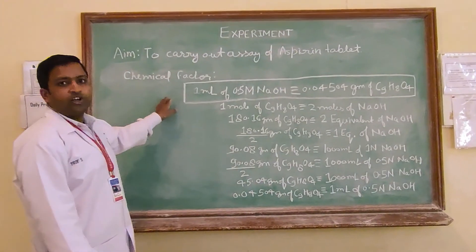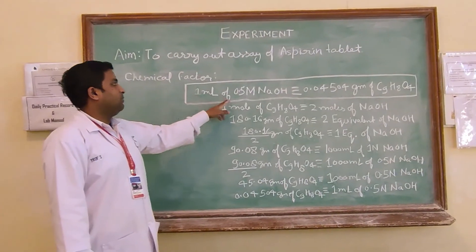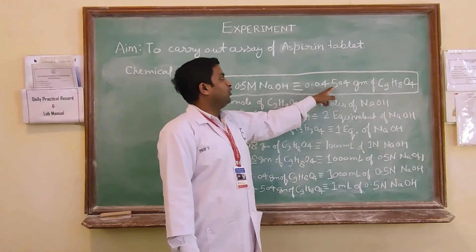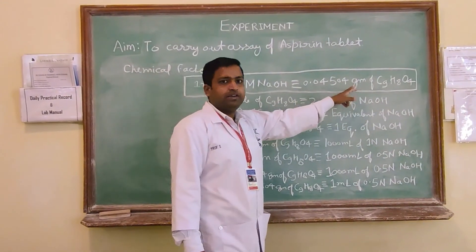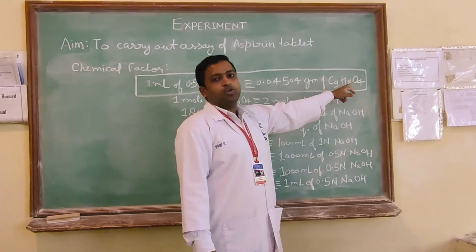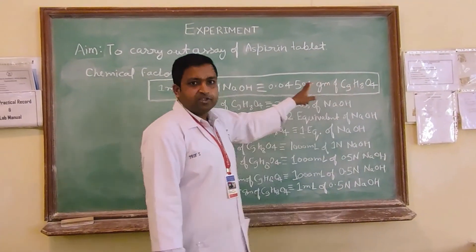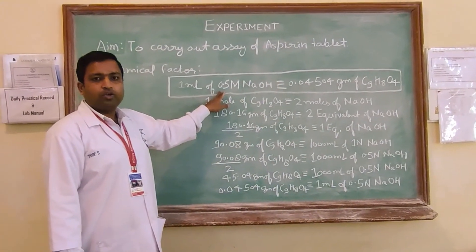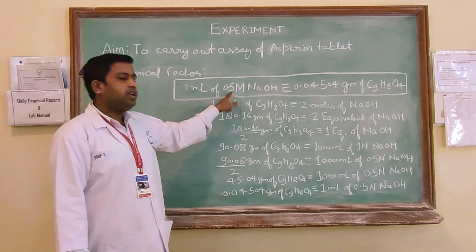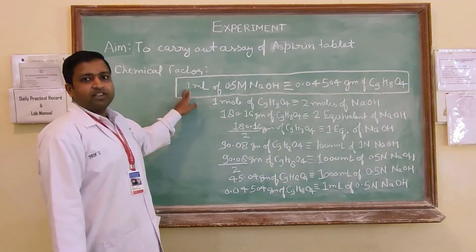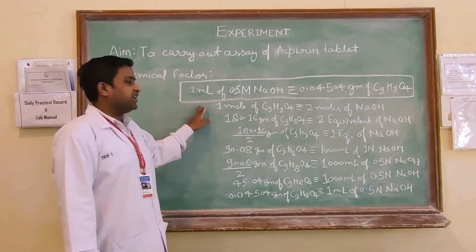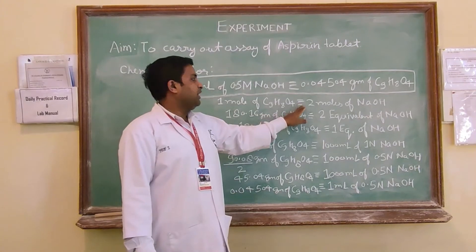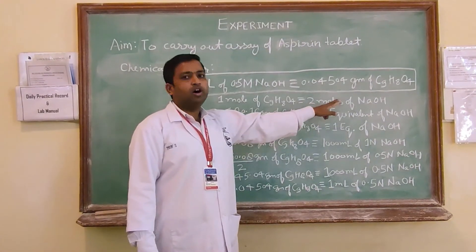In the introductory section we have seen that 1 ml of 0.5 molar NaOH is equivalent to 0.04504 gram of aspirin. C9H8O4 is the molecular formula of aspirin. 0.5 molar NaOH will be equivalent to 0.5 normal NaOH. From here this data comes.